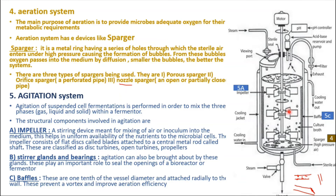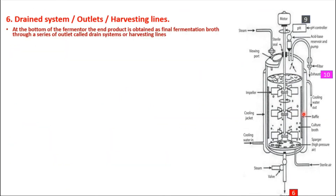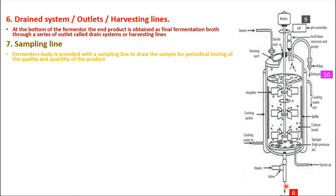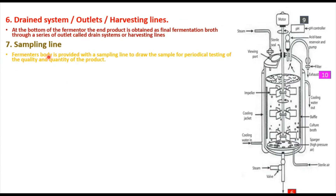Next is the drain system or harvesting line — this is where you collect your final fermentation broth. Then there is the sampling line: the fermenter body has a sample line to draw samples for periodic testing of the quality and quantity of the product. Samples can be collected from the harvesting line or through a separate tube from the fermenter.